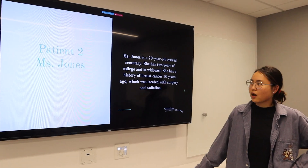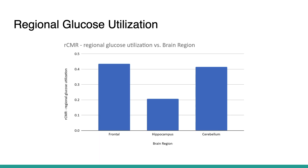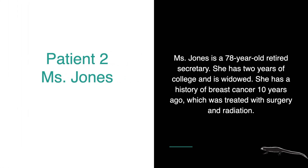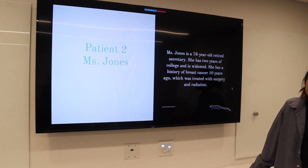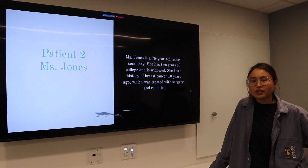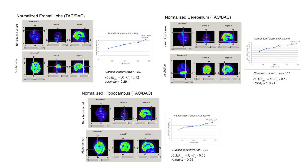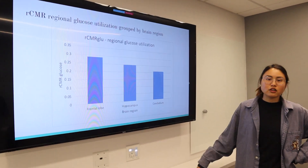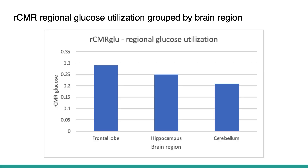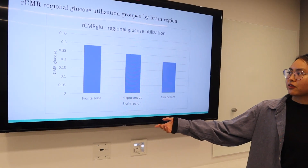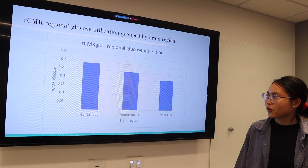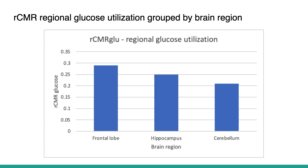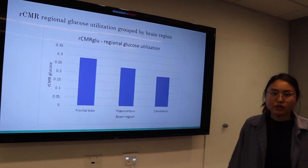Our second patient is Ms. Jones, a 78-year-old retired secretary with two years of college who is widowed. She has a history of breast cancer ten years ago, treated with surgery and radiation. Using the same normalization procedures as patient one, the RCMR values for the three brain regions are: frontal lobe at 0.29, hippocampus at 0.25, and cerebellum at 0.21. Ultimately, there is no statistically significant difference between the three RCMR values for these three brain regions.